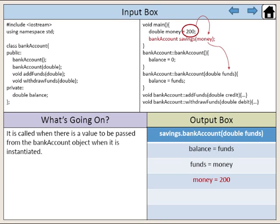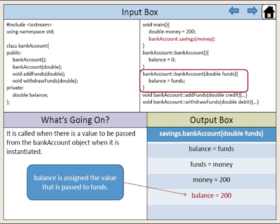We initially define money with a value of 200, so the value of 200 is then assigned to funds. Inside the overload constructor, balance is assigned to the value that is passed to funds. Therefore, balance is assigned to the value of 200.